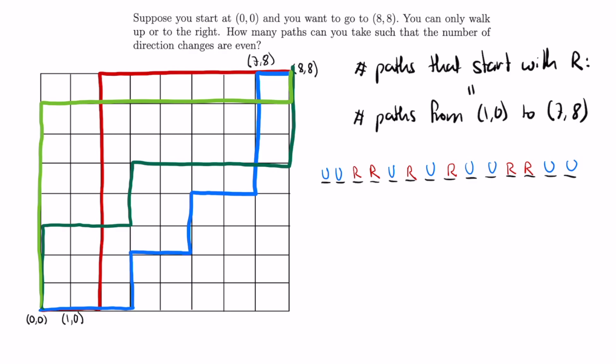Now observe that if we pick the positions of the 6 R's in this sequence, then all the positions of the 8 U's are already determined just by placing them in all the free spots. So we just have to find the number of different arrangements of 6 R's in those 14 slots.